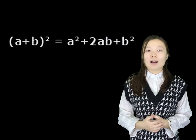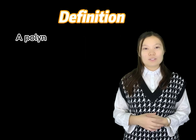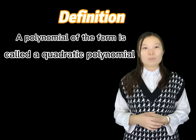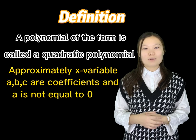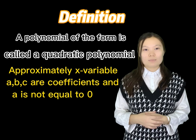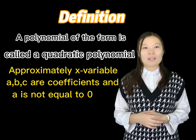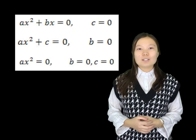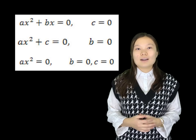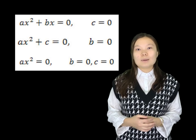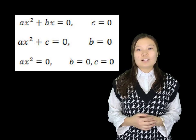What is a square trinomial? A perfect square trinomial can be expanded as the square of binomials. A polynomial of the form with variable x and coefficients a, b, c — where a is not equal to zero — is called a quadratic polynomial. A quadratic equation where b or c are equal to zero is called an incomplete quadratic equation.